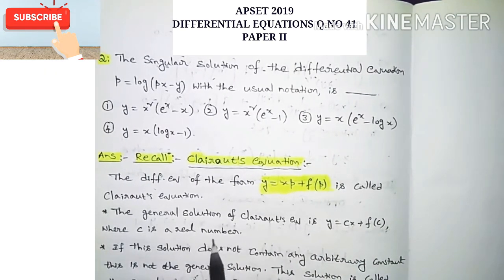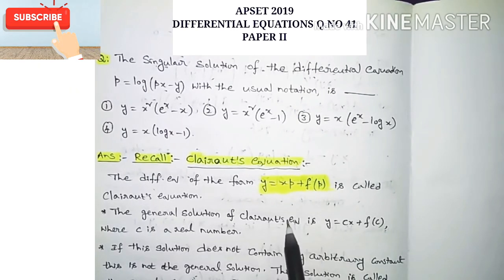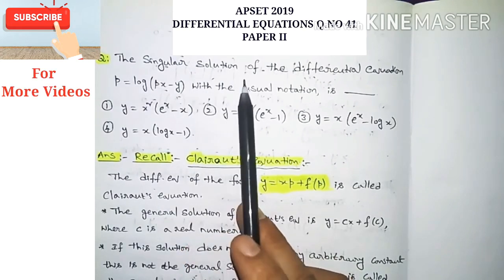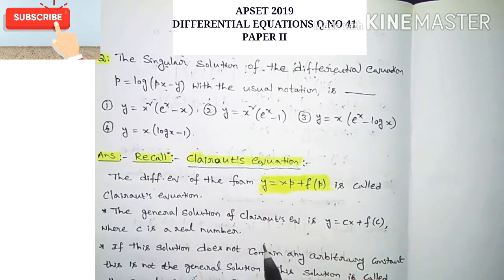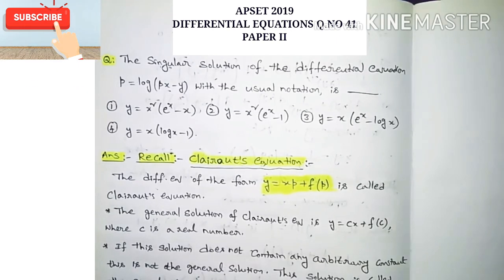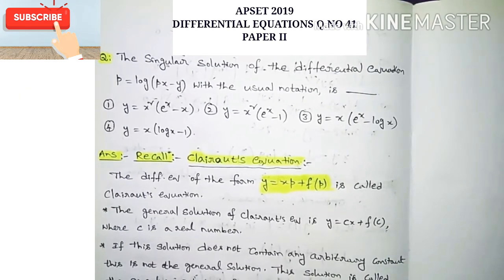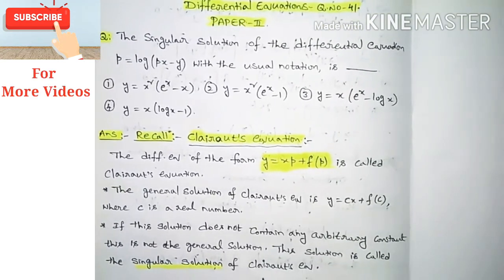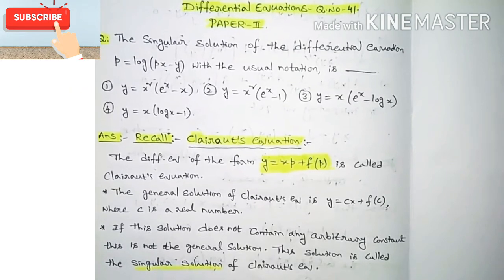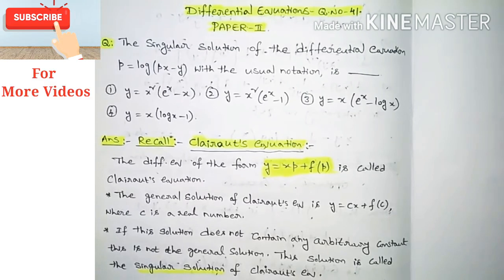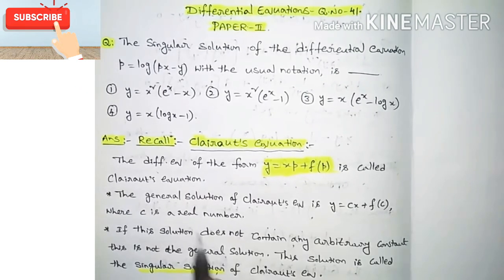In the given problem we have to find the singular solution of the differential equation. The singular solution does not contain any arbitrary constants. If the solution does not contain any arbitrary constant, it is not a general solution — in particular, this solution is called the singular solution of Clairaut's equation.